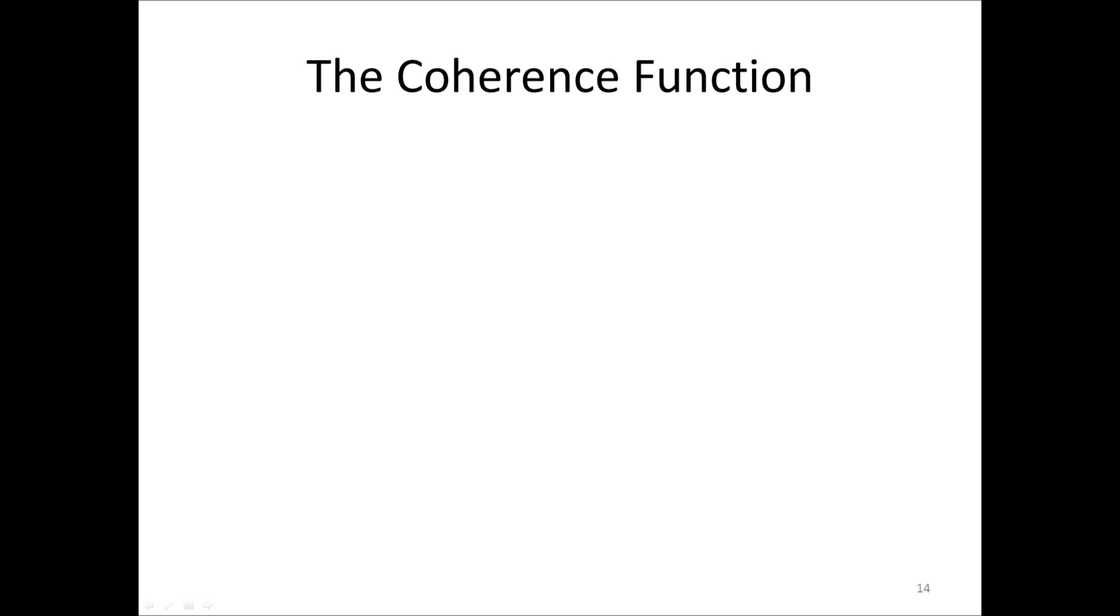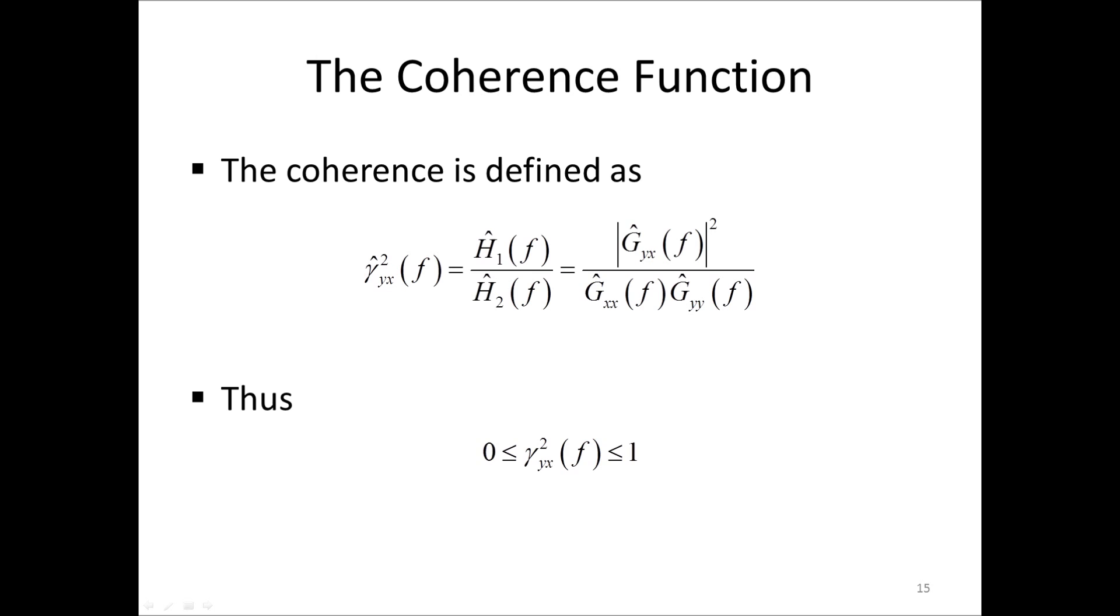This fact can now be used to define a new function as the ratio of H1 and H2. This defines a function called the coherence function. Note that the coherence function is denoted by gamma squared YX. If we write the equation out, we find that the coherence is equal to the magnitude square of the cross-spectral density GYX divided by GXX and GYY. Thus, the coherence must be larger than 0 since it is computed from positive spectra, and it must be less than 1 since H1 is smaller than H2.